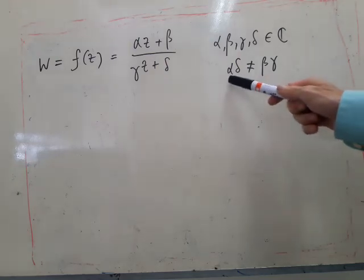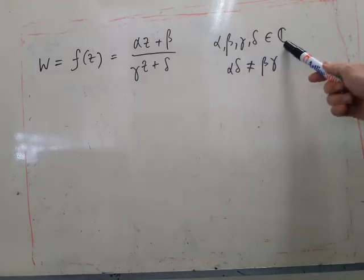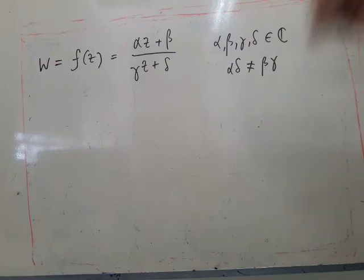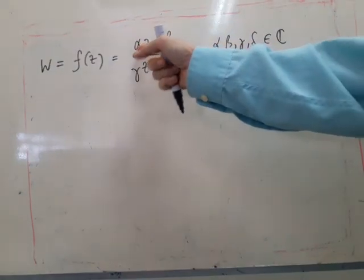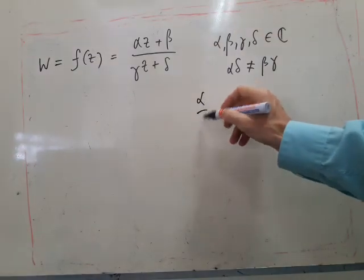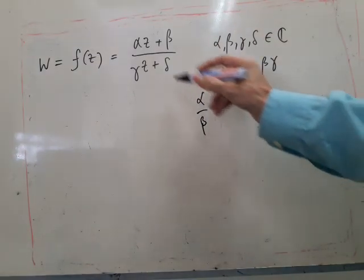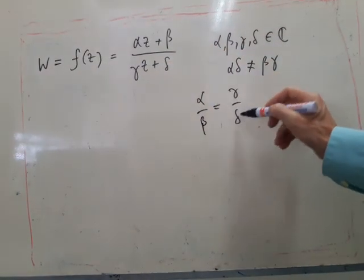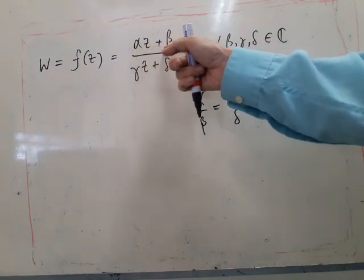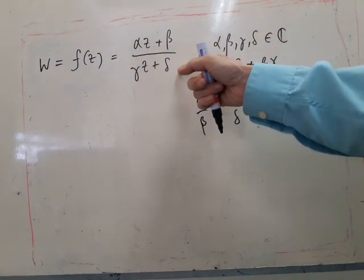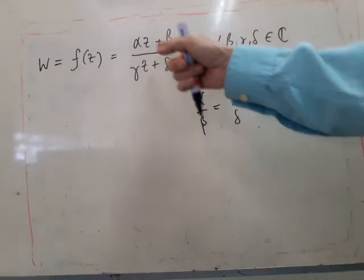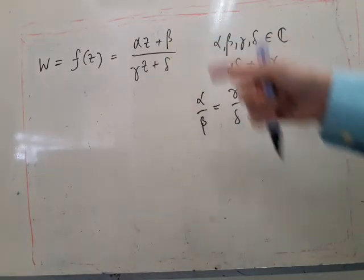We need the condition where alpha, beta, gamma, delta are any complex numbers, except that we need this condition. Basically, if the ratio of alpha to beta is equal to the ratio of gamma to delta, then we'll just get a constant when we divide this by this. We can just factor out z plus something and get a constant.